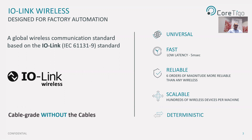IO-Link Wireless ensures a low latency of five milliseconds and very high reliability, measured by the packet error rate. It is a million times more reliable than conventional wireless networks such as Wi-Fi, Bluetooth, ZigBee, or Wireless HART. In addition, the IO-Link Wireless protocol is designed to be very robust — it coexists with other wireless systems in range and is very immune to noisy and harsh environments such as factory automation environments.